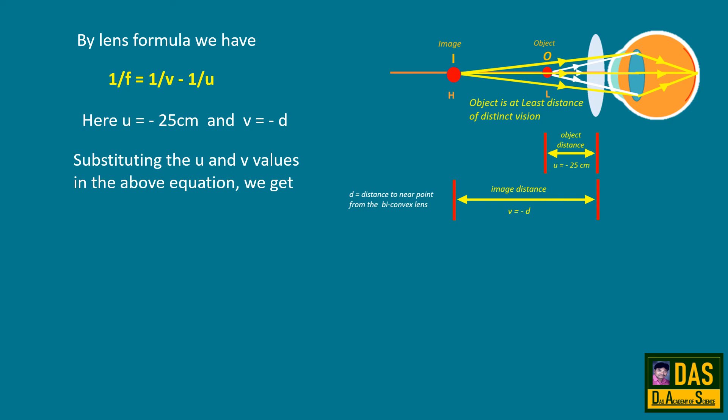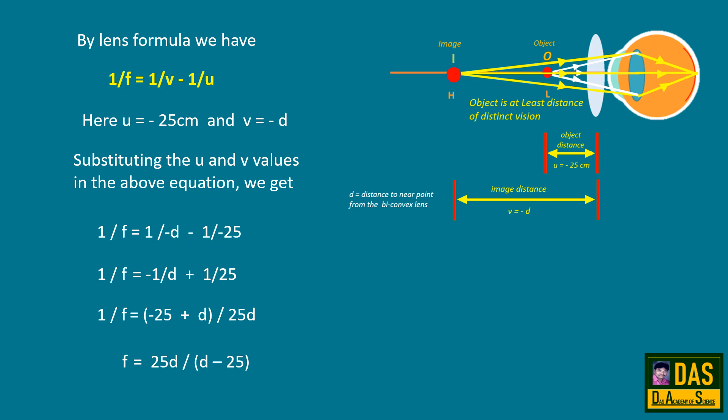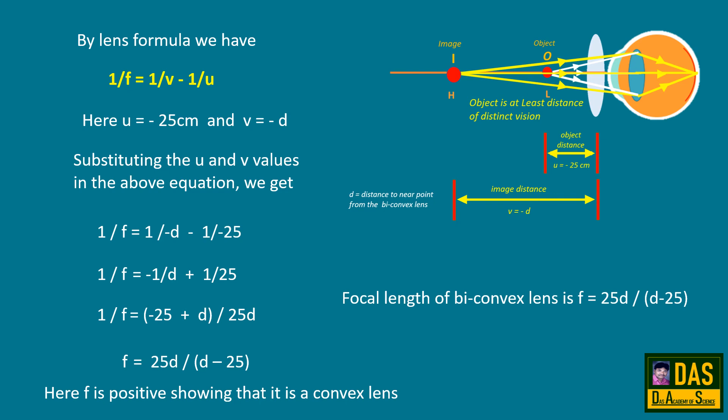Substituting u = −25 cm and v = −d into the lens formula, 1/f = 1/v − 1/u, we get 1/f = 1/(−d) − 1/(−25) = −1/d + 1/25. Taking LCM: 1/f = (−25 + d) / 25d, so f = 25d / (d − 25). Here f is positive, confirming it is a convex lens. Therefore, the focal length of the biconvex lens used to correct hypermetropia is 25d / (d − 25).